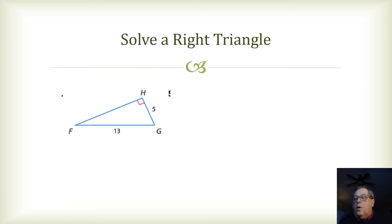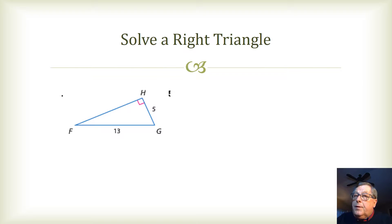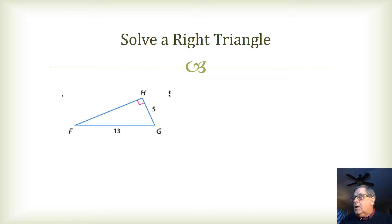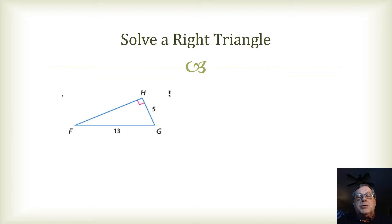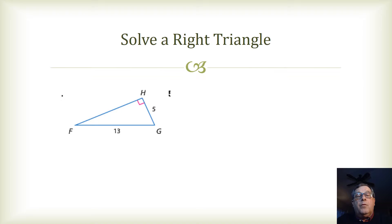Now we're going to use what we have learned from trigonometric ratios and inverse trigonometric ratios and a little bit of Pythagorean theorem mixed in to solve a right triangle. What we mean by solving a right triangle is finding the missing angle measures and the missing side lengths using combinations of inverse trigonometric ratios, trigonometric ratios, and sometimes the Pythagorean theorem.